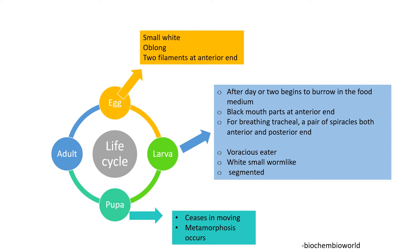The morphological characters of the egg: it is a small white oblong structure and there are two filaments at the anterior end. The larvae is a voracious eater, worm-like, white and small in size, and usually segmented. For breathing, tracheal or perispiracules are present both at the anterior as well as at the posterior end.